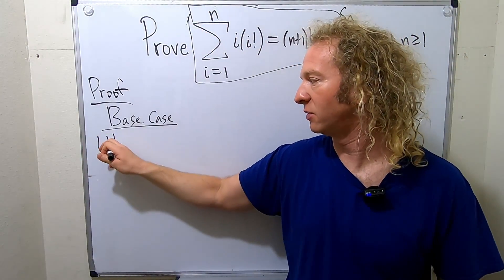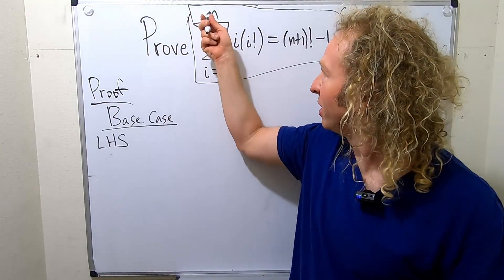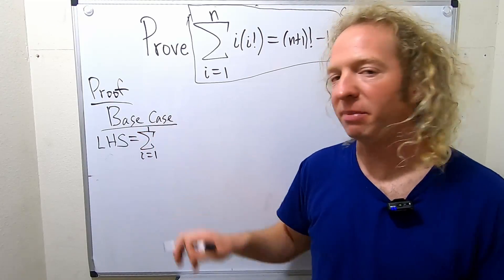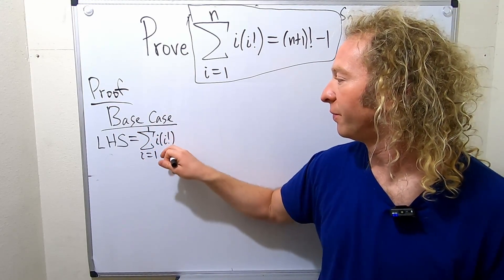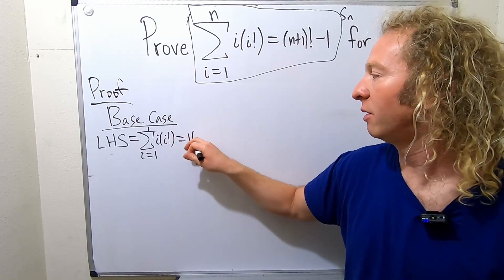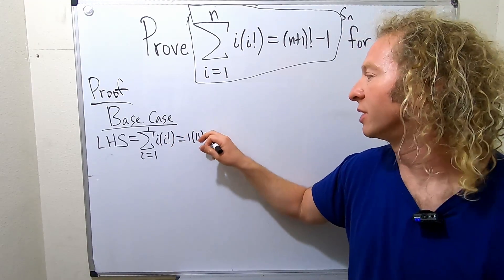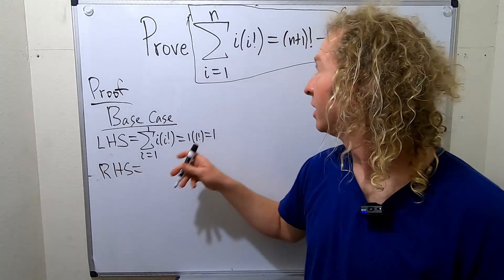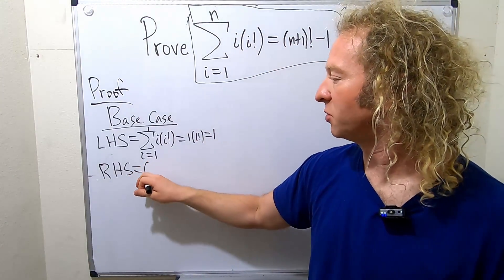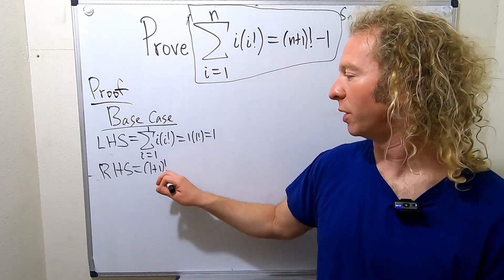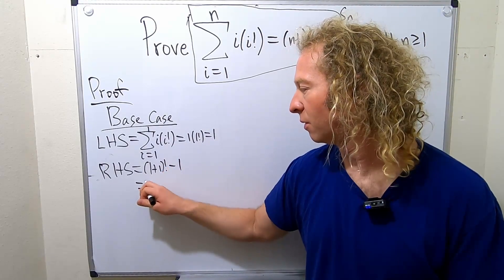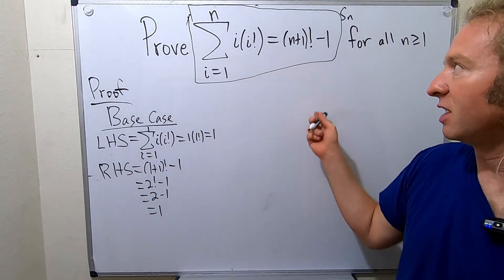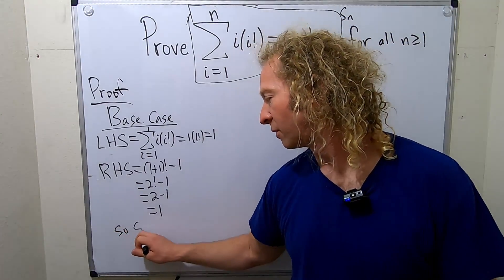So the left-hand side — I love using this notation, LHS. You replace the n with 1. This is equal to the finite sum as i runs from 1 to 1, being totally pedantic, i times i factorial. Basically it means you plug in 1, so you get 1 times 1 factorial. 1 factorial is 1, so you just get 1 times 1, which is 1. The right-hand side is 1 plus 1 factorial minus 1. So that's 2 factorial minus 1, which is 2 minus 1, which is 1. So the left-hand side is equal to the right-hand side.